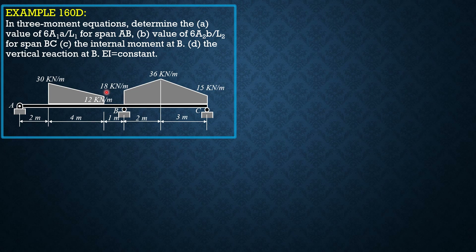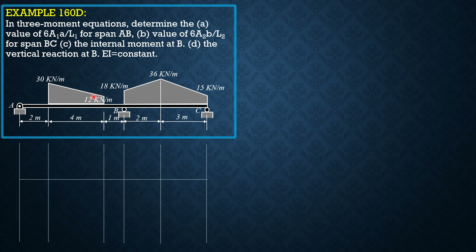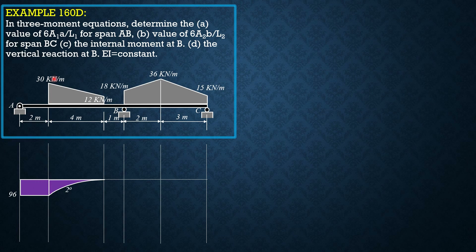Let's divide this span — this trapezoidal loading — into rectangular and triangular loading. For the rectangular loading, 12 times 4 is 48, times 2 is 96, a second-degree curve. That 96 is extended to the selected moment center A as shown. There is still a force of 12 times 4 which is 48 — that's the only couple — so we have 96 here. The moment of the 48 kN load about A gives another triangle of 96 kN·m.